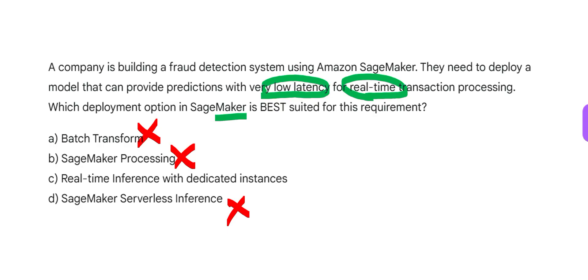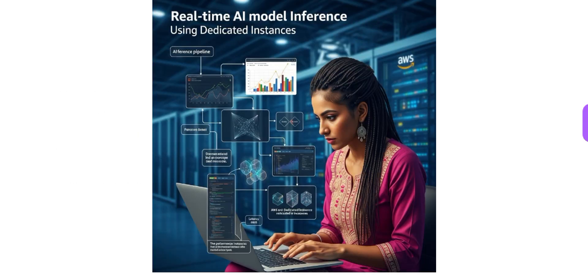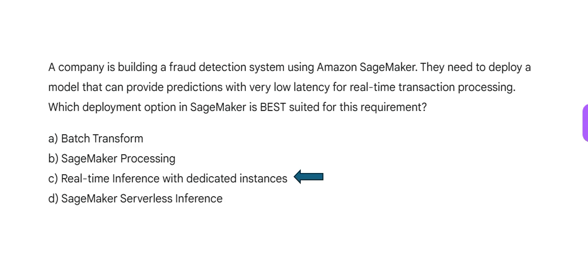Real-time inference with dedicated instances is the right answer. We are talking about real time, and this option directly passes the load to compute that is always on — there is no cold start problem. It works perfectly because the engine is already on. Imagine a car whose ignition is always on — you can drive straight away without warming. Similarly, the instance is always on, so our answer is Option C: real-time inference with dedicated instances.